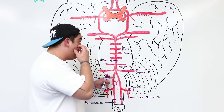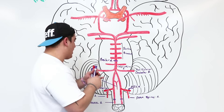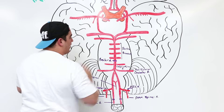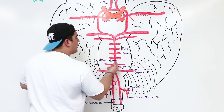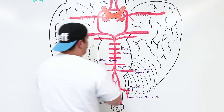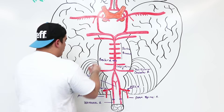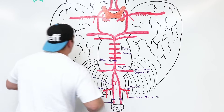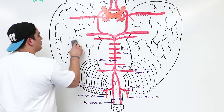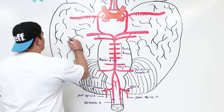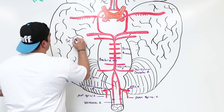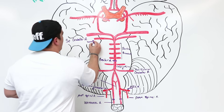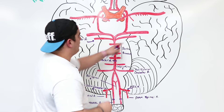Moving past the pontine branches, the basilar artery gives off another branch that supplies the top of the cerebellum. This is called the superior cerebellar artery, present on both sides.